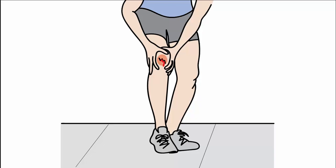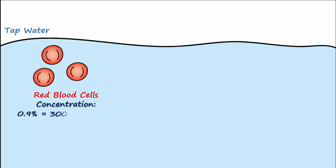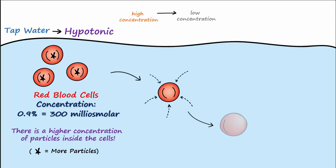Let's now apply what we've learned to body cells. Let's say you fall down and slash up your knee. You collect some blood and put some of the blood cells into a sink filled with tap water. Note that tap water has few ions in it, so it's almost 100% water. Also know that the solution inside red blood cells has a concentration of about 0.9%, or 300 milliosmolar. There is a higher concentration of particles in the cells, so we say that the tap water is hypotonic compared to the solution inside the cells. The cell membrane is selectively permeable and only lets water cross, not the solute particles. Water will go from high to low — water concentration is highest in the tap water, so it would enter the cells, making the cells get larger, and maybe even breaking the cells.